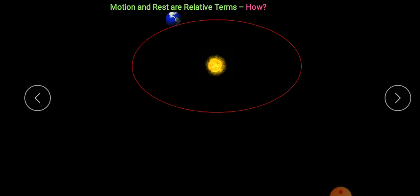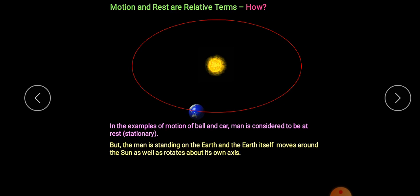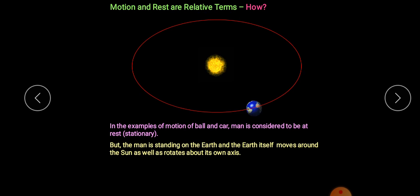This is further explained with an example of the sun and earth. The earth moves in its orbit around the sun and also rotates about its own axis. All the previous examples — the ball, car, and man — were moving with respect to the man. But the man is standing on the earth, and the earth itself moves around the sun and rotates about its own axis. So from space, the person, cars, ball, and any object on earth are in continuous motion.